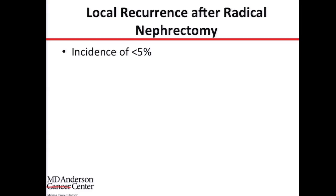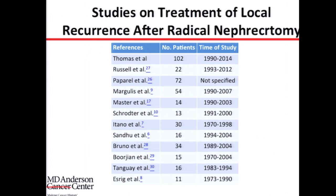Finally, recurrence after radical nephrectomy — the most rare type of local recurrence, with an incidence of about 2% to 3%, less than 5%. Interestingly, this has the most publications, though most series involve only single or two-digit numbers of patients. This is our series, just published a couple of months ago by our fellow Arun Thomas, which I'll cover in detail shortly.